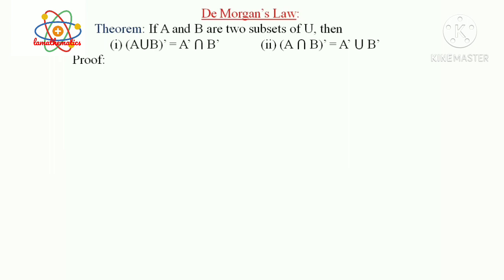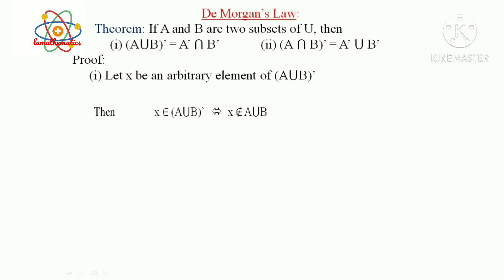We can prove that (A union B)' equals A' intersection B'. Let X be an arbitrary element of (A union B)'. So X is an element of (A union B)'.